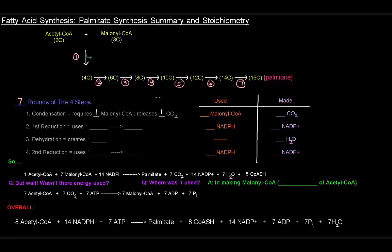Because this happened seven times, we multiply everything by seven to find out what we used and made. We used one malonyl-CoA in each condensation step, so seven condensation steps total means we used seven malonyl-CoA's. We released one carbon dioxide each time, so seven carbon dioxides are released.